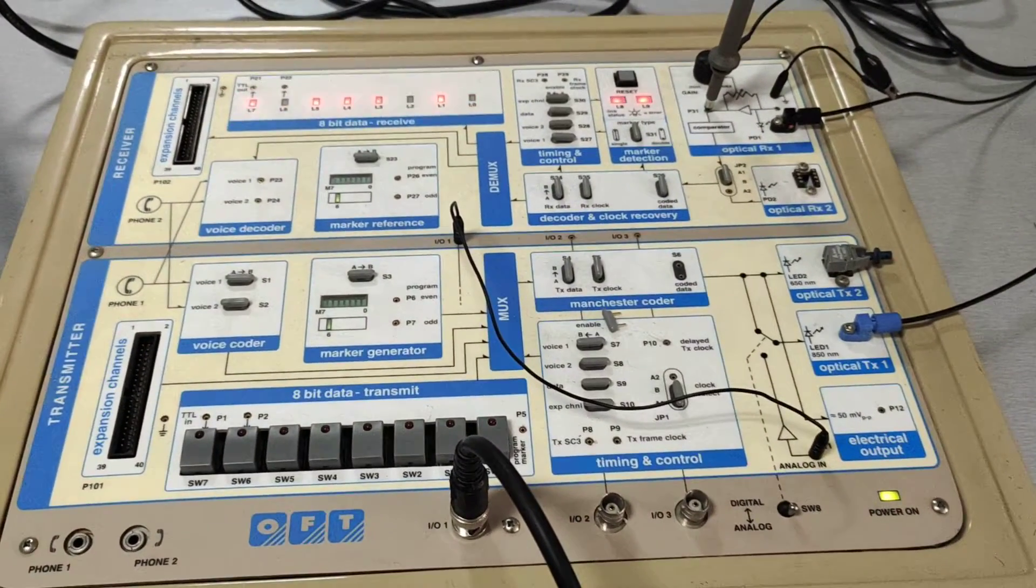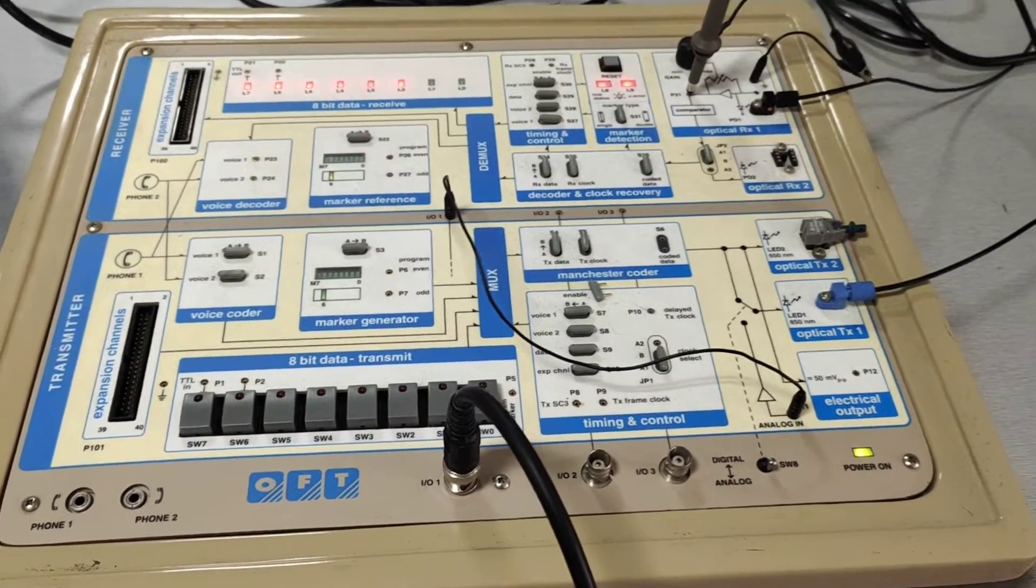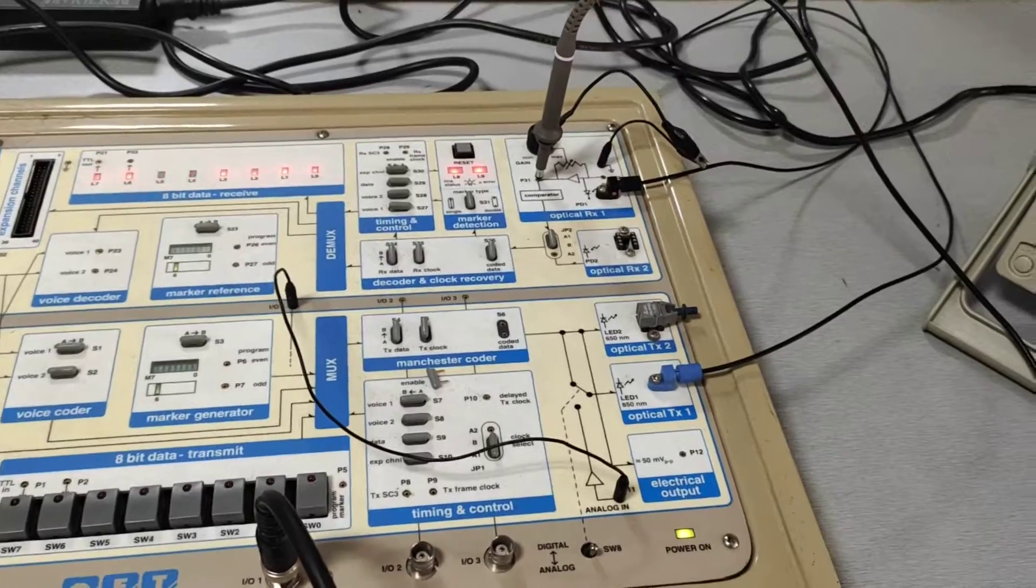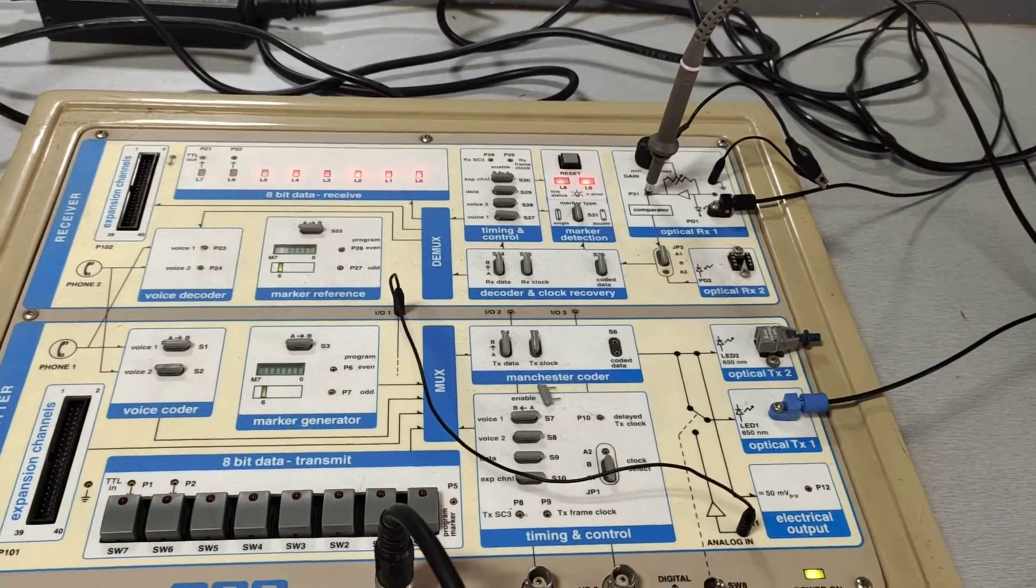What is meant by attenuation? Attenuation is nothing but loss of signal strength. We are going to measure how much signal is reduced while connecting longer length of optical fiber.